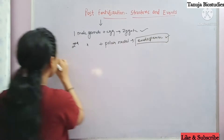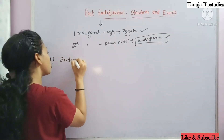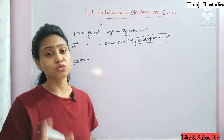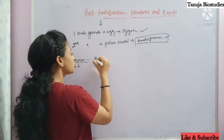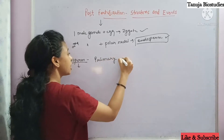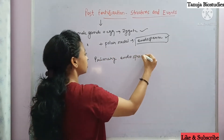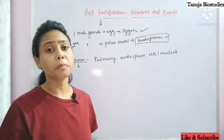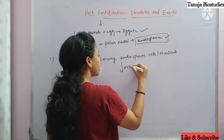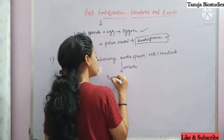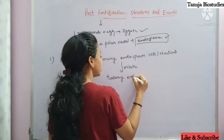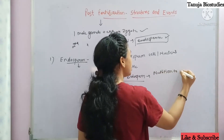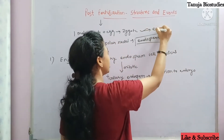Let's take the endosperm first. The male gamete fuses with the polar nuclei — we call this triple fusion. The structure formed is called the endosperm. What is its main role? It generally works for nutrition; it provides nutrition to the embryo, which develops from the zygote.